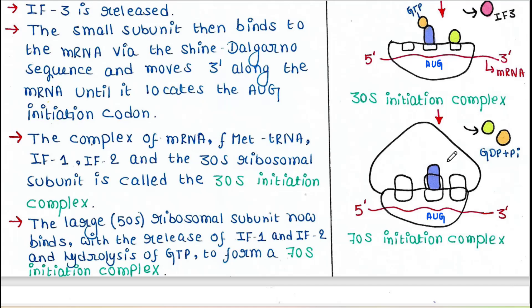The large ribosomal subunit now binds. IF1 and IF2 get released. GTP hydrolysis takes place to release IF2. And it is the 70S initiation complex where two ribosomal subunits are joined.